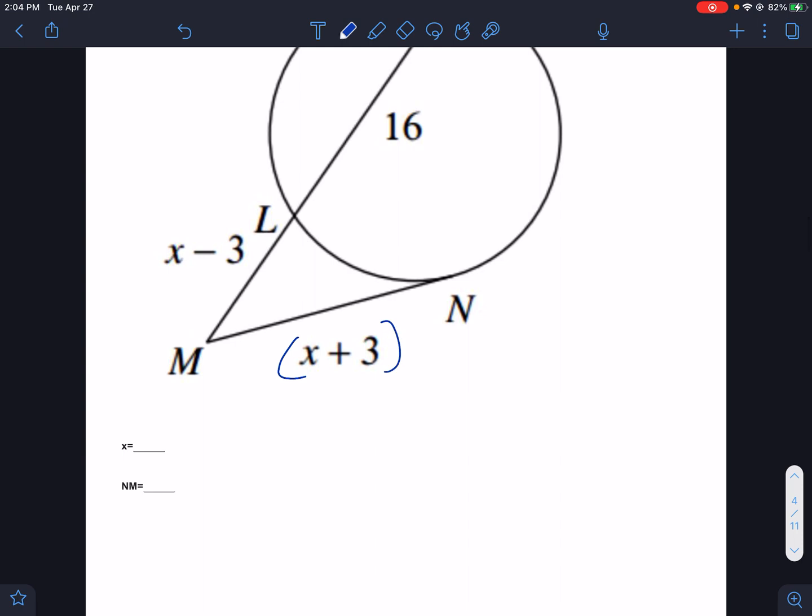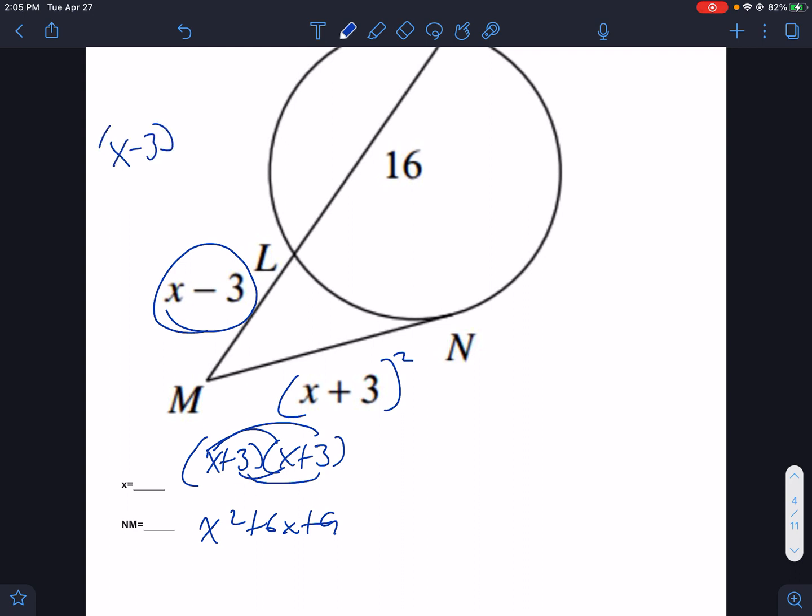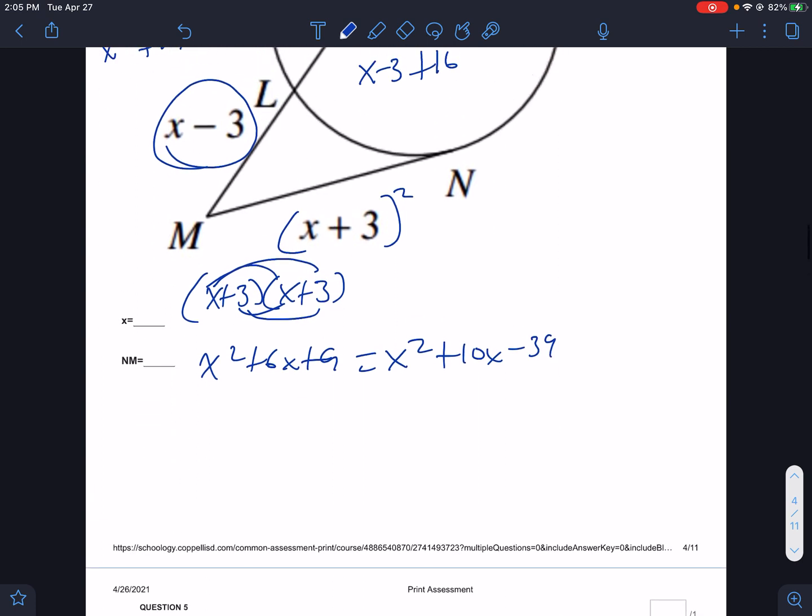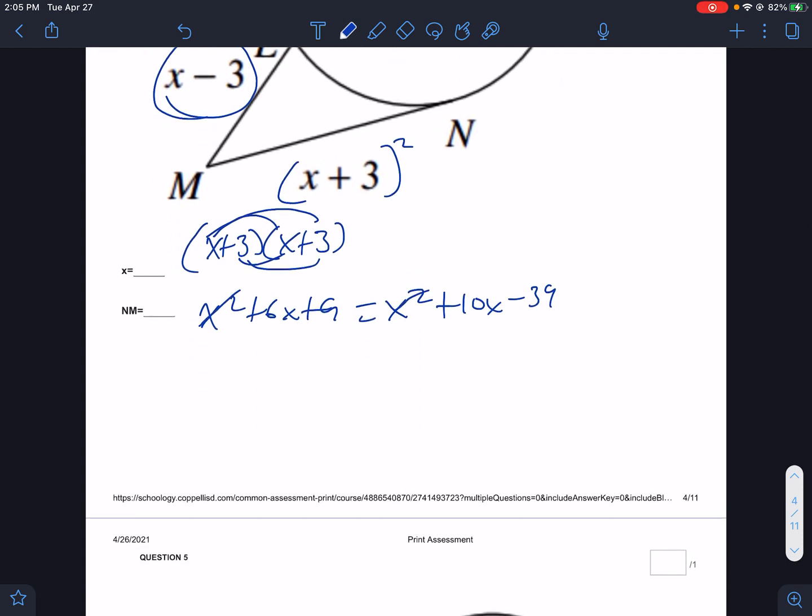Here we have a tangent again, so it's x plus 3 squared, which we write out as x plus 3 times x plus 3, and we have to distribute. You have to distribute all of that, and you're going to get x squared plus 6x plus 9. The other part is outside x minus 3 times total. Well, the total would be x minus 3 plus 16, which is x plus 13. So we distribute that all out as well, and we get x squared plus 10x minus 39. So this equals x squared plus 10x minus 39.